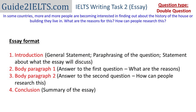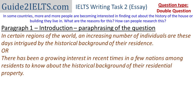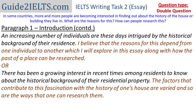Let's start writing. The first paragraph consists of three parts: a general statement, paraphrasing of the question, and a statement mentioning what the essay will talk about. The general statement is optional — I'll talk about that later. Starting with paraphrasing, I've done it in two ways. First: 'There has been a growing interest in recent times among residents to know about the historical background of their residential properties.' Second: 'An increasing number of individuals are these days intrigued by the historical background of their residence.' I would follow that with mentioning there are a variety of reasons and many different ways of researching it.